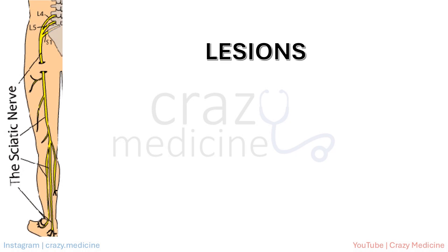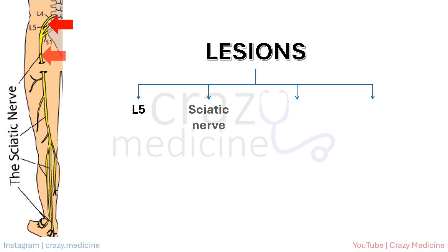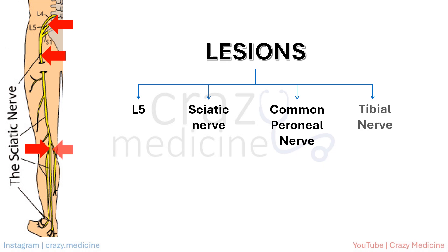In the case of foot drop, lesions can be at any point along the pathway from the root to peripheral nerve — that is, the peroneal system. This includes lesions at L5 root, sciatic nerve, common peroneal nerve, and tibial nerve. Let's now explore each of these lesions individually.